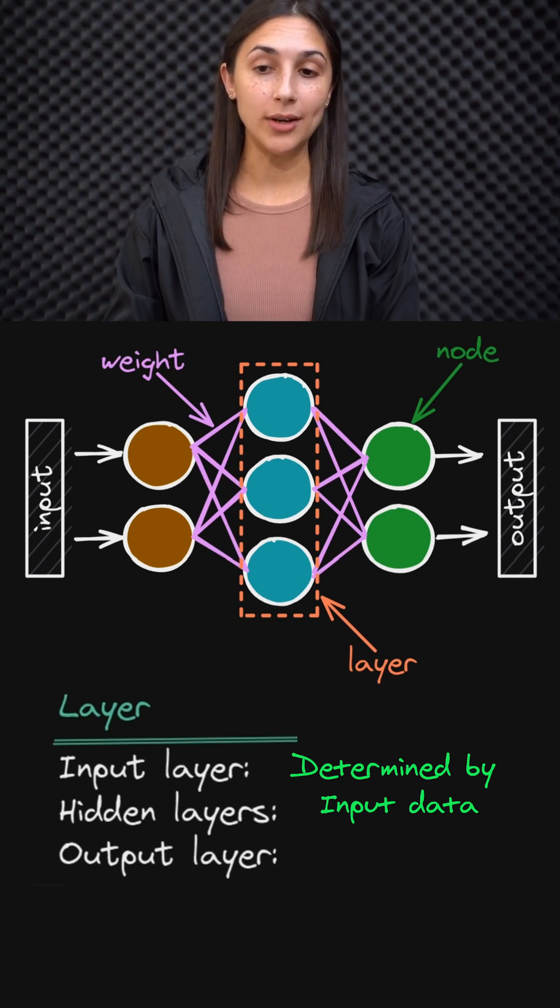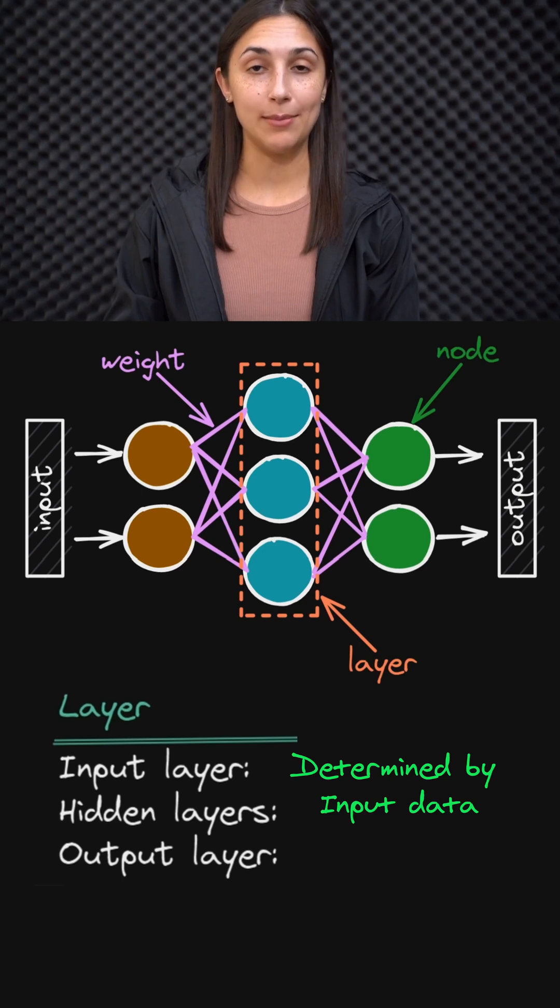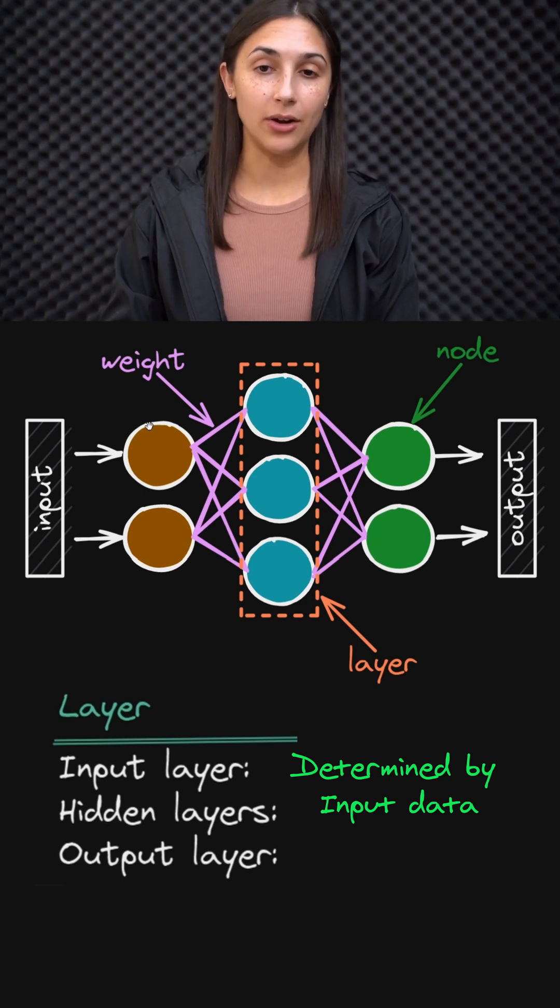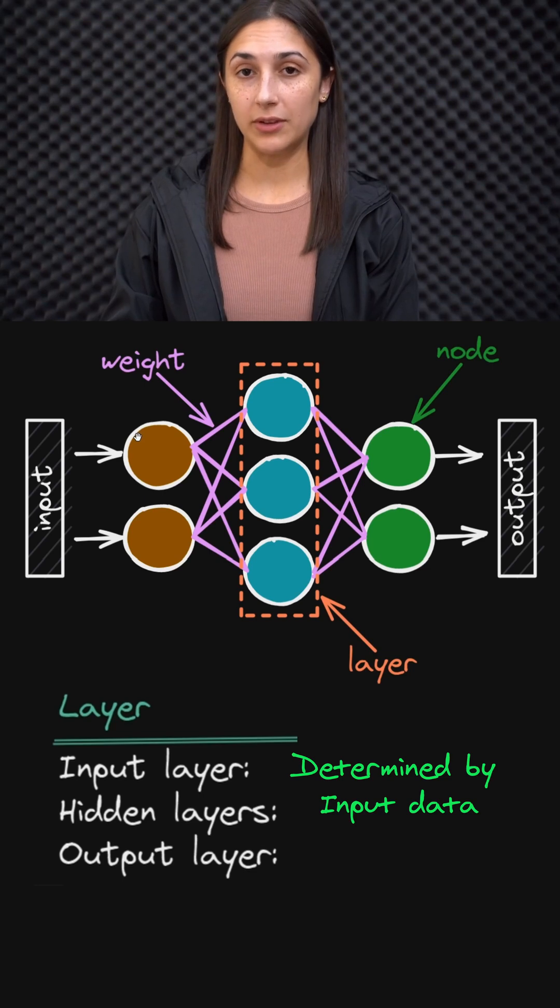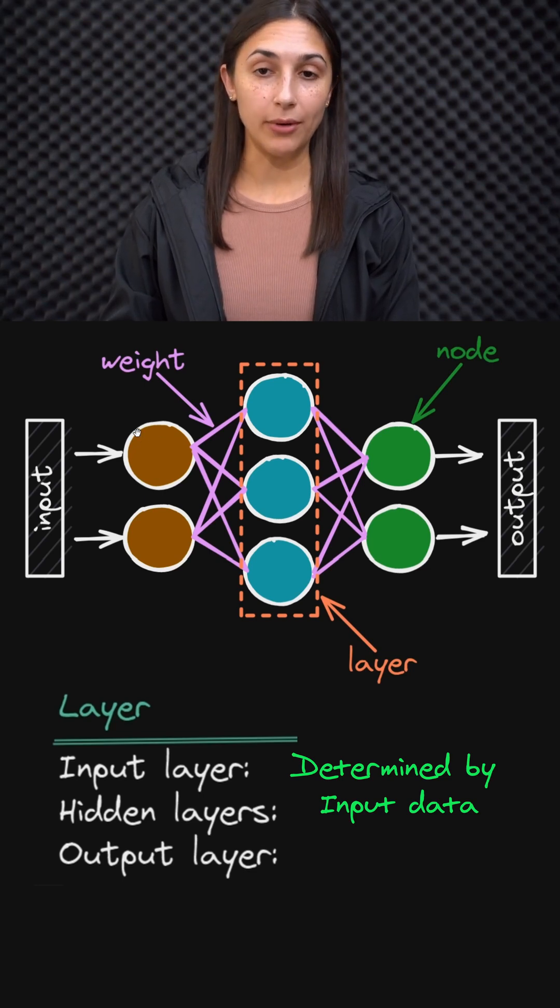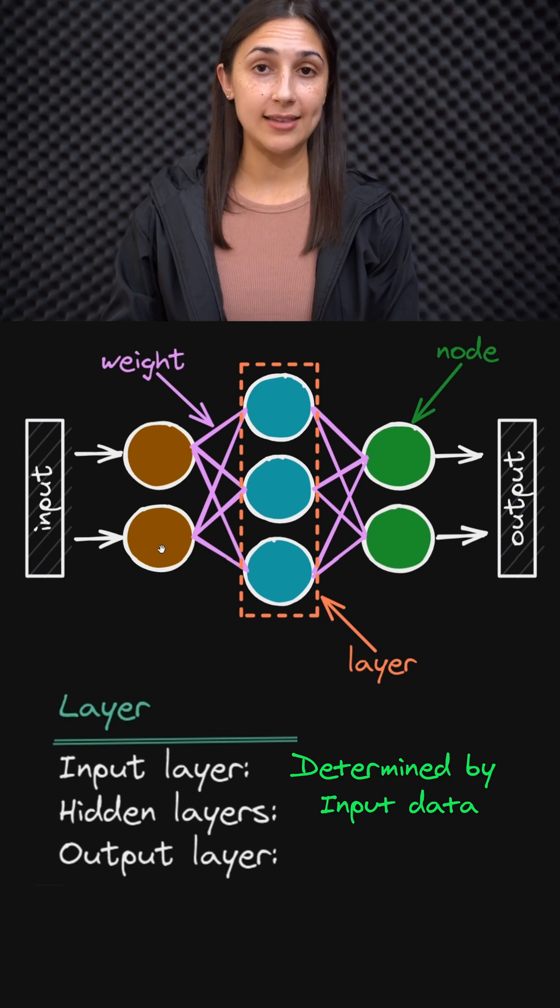And so therefore, the input layer must have one node for each component of the input data. And actually, the nodes for the input layer are just for illustrative purposes because there's no operation occurring on this input data—it's just being sent as it's passed to the nodes in the hidden layer.